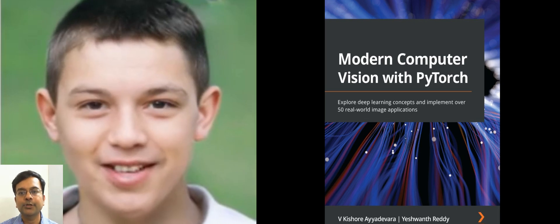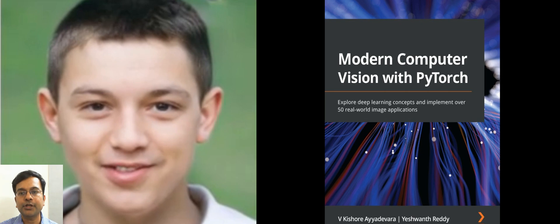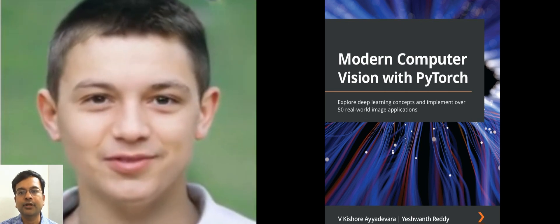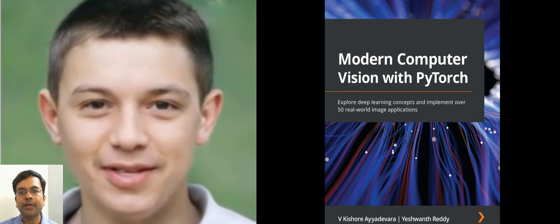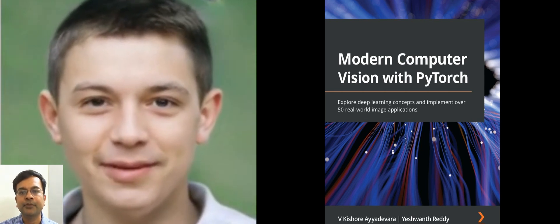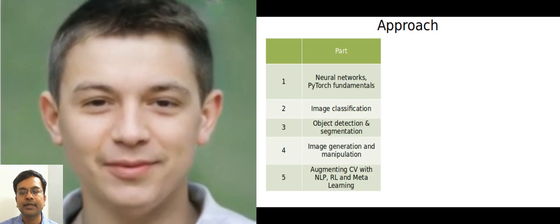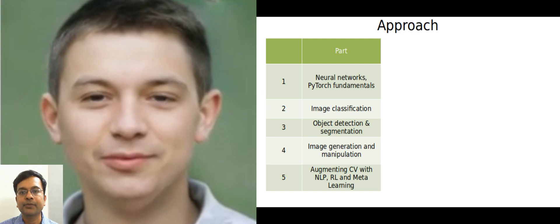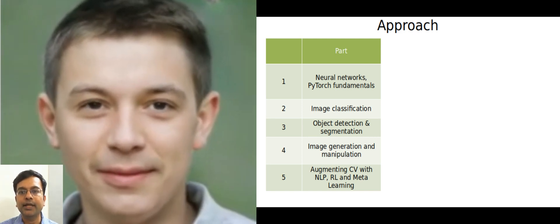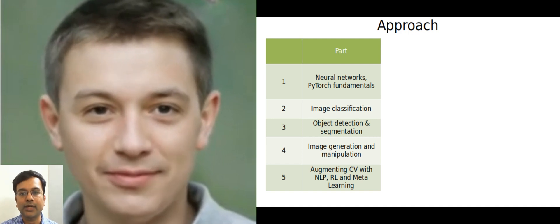Hi, I'm happy to announce that our book Modern Computer Vision with PyTorch is now available for ordering. This book is intended to be a comprehensive coverage of computer vision using deep learning, where it is broadly divided into five different parts with increasing complexity, where some of the architectures you will learn about in the later parts of this book were invented as recently as in 2020.